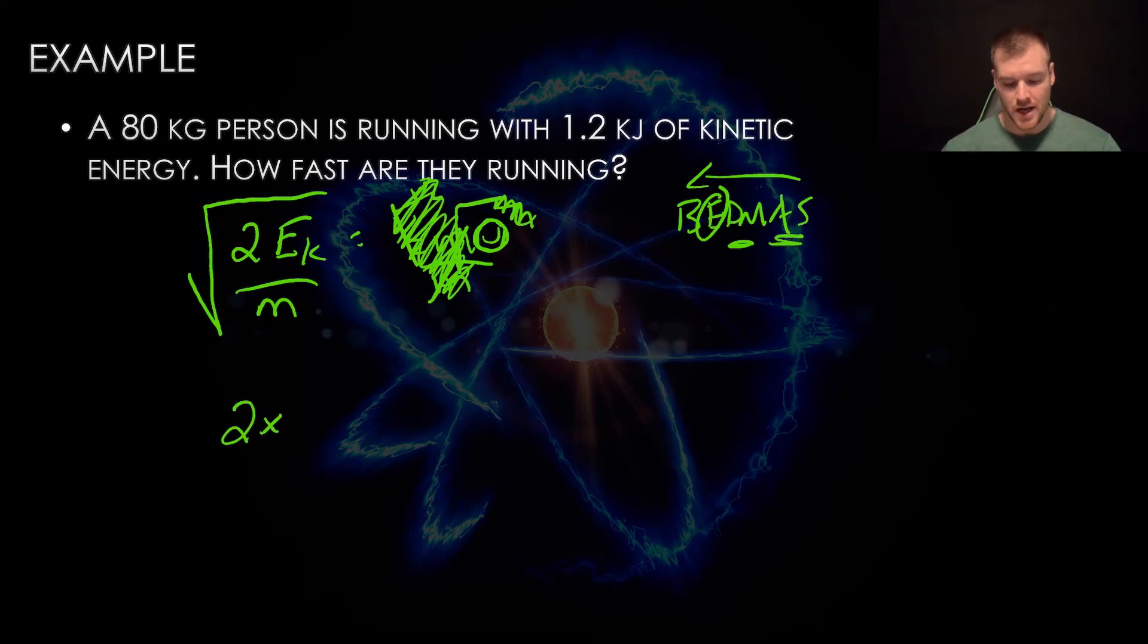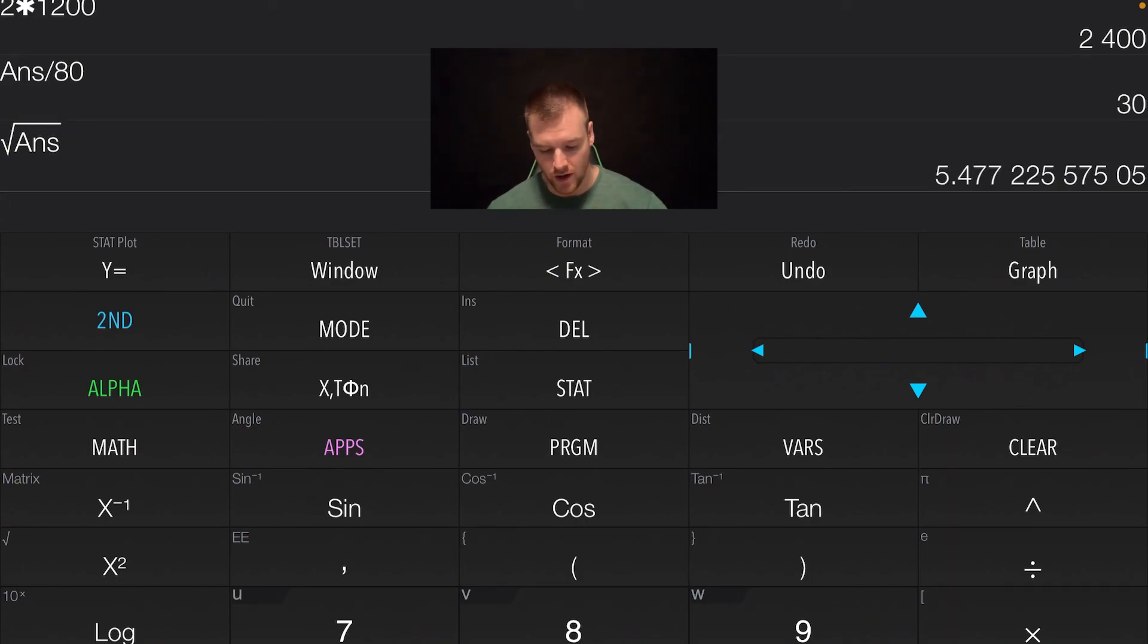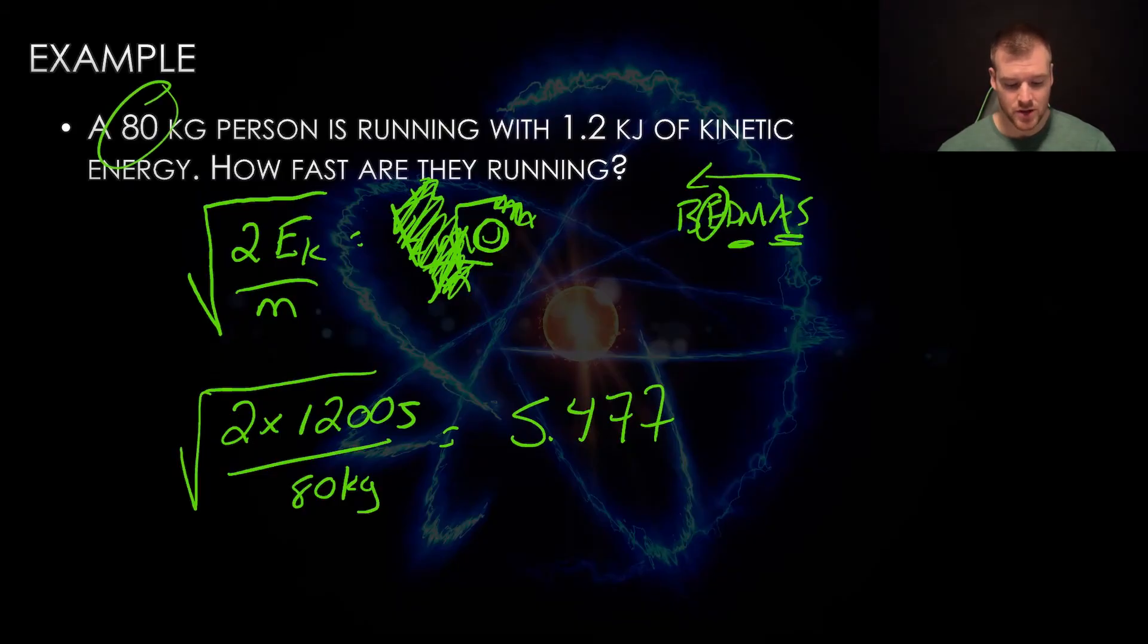Filling in the numbers, I have two times 1.2 kilojoules. This is another complication—it's not 1.2 joules but kilojoules, which means 1000 joules. So I need to times that by 1000 and put 1200 joules. Then I divide by my mass, which is 80 kilograms. Once I've done all that, I take the square root. Let's go to the calculator. We'll take two times 1200, get 2400, then divide by 80 to get 30. The last step is to take the square root—second, square, second answer. This is 5.477. We round to two significant digits: 5.5. Our units are meters per second.